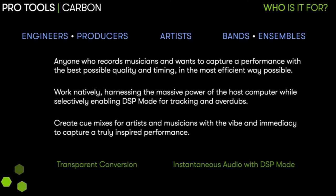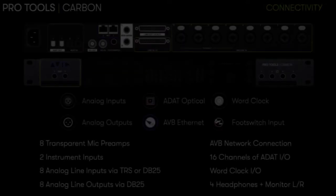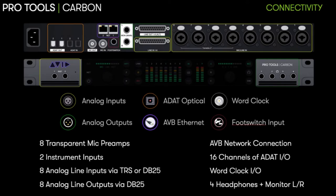Today I'm going to be taking you through the features of Carbon and how easy it is to set up and begin recording using the hybrid engine. Carbon is a 1U piece of hardware and connection-wise you have analogue outputs, analogue inputs, ADAT optical, footswitch input, word clock, talkback and AVB connectivity allowing you to connect to your Mac. I will also be touching on some of these in more detail throughout the demo.